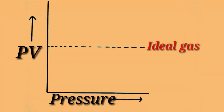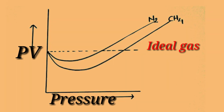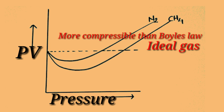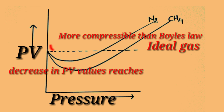If we plot a graph of PV against P, it should be a straight line — the value of PV is constant for Boyle's law. The dotted line indicates the ideal gas behavior. But in actual cases, it is seen that for nitrogen and methane, PV value decreases with increase in pressure, showing these gases are more compressible than Boyle's law requires.